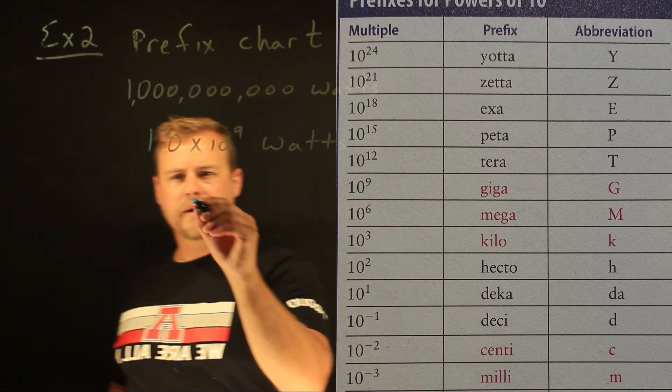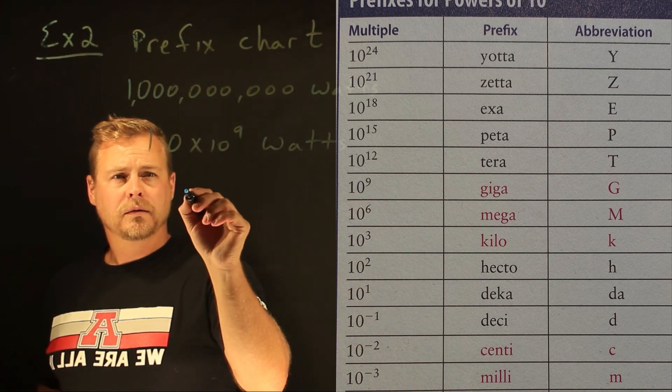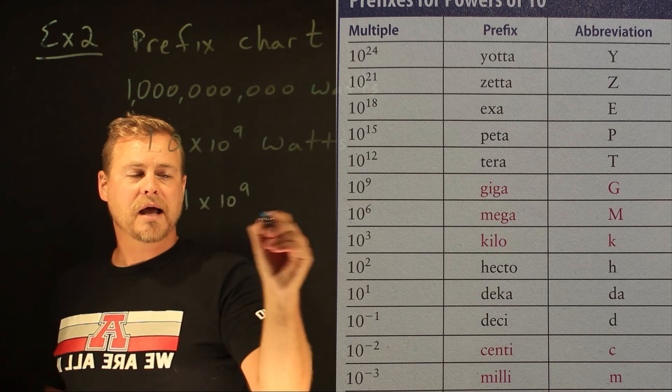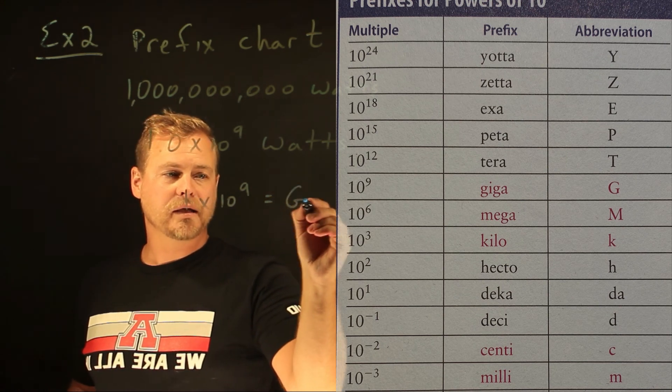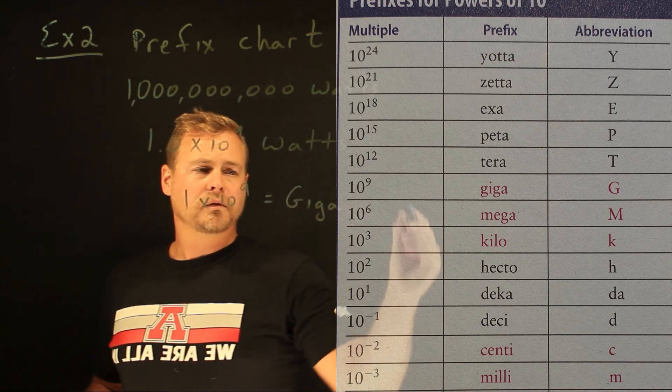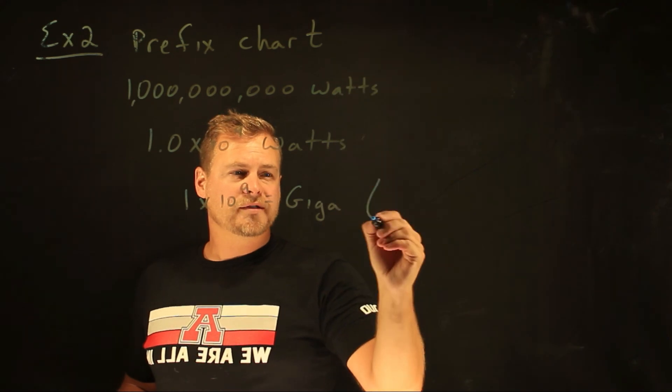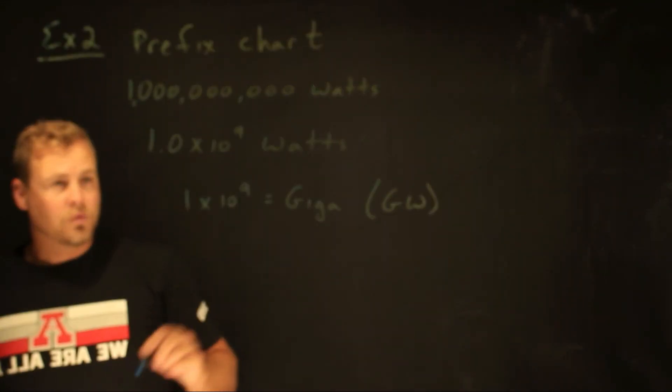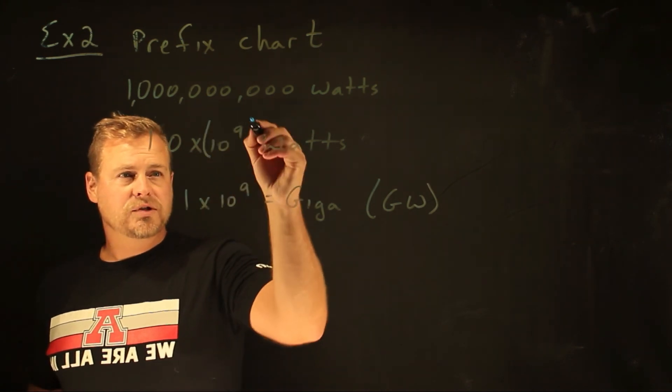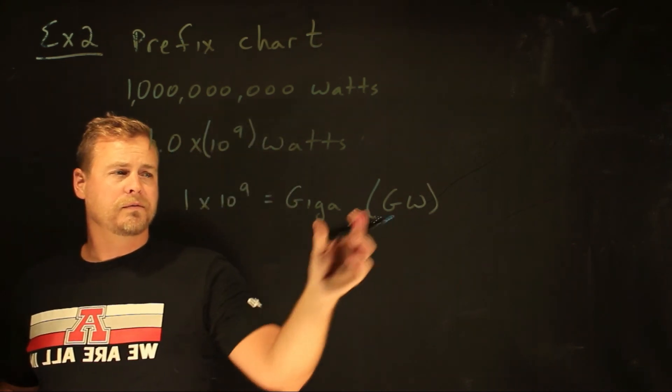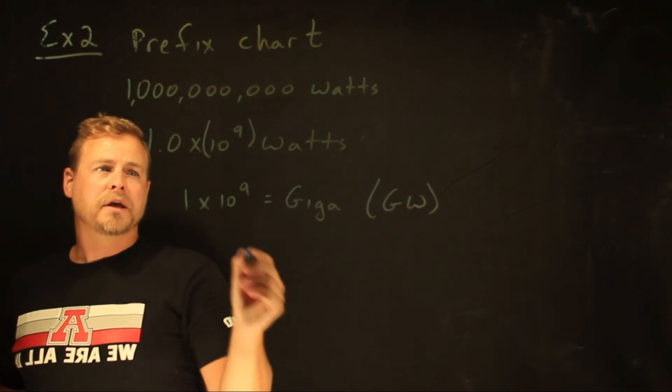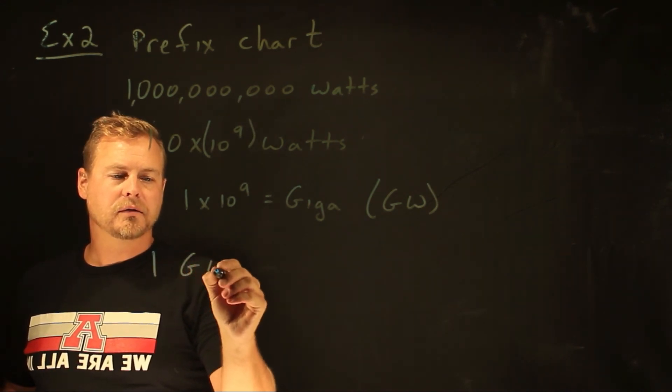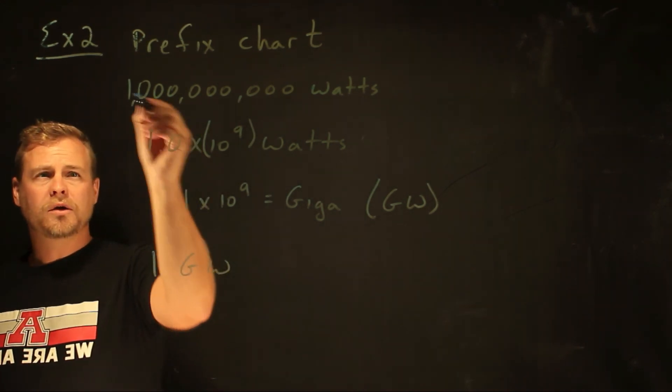But I know, if I look at this prefix chart, that 1 times 10 to the 9 is a giga. So we could call this a gigawatt. And so what I do is I substitute that for the G, and I can just say it's 1 gigawatt. So these are all equal.